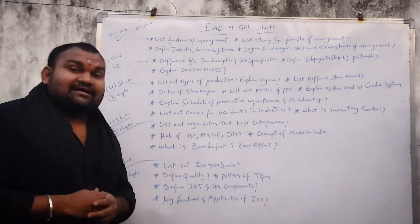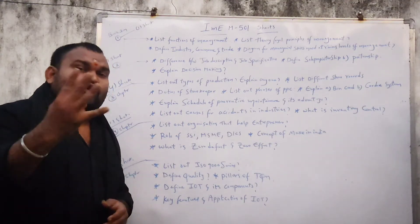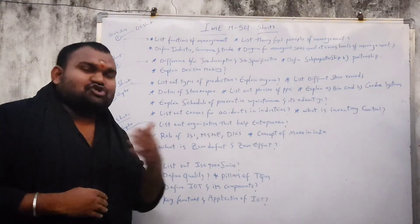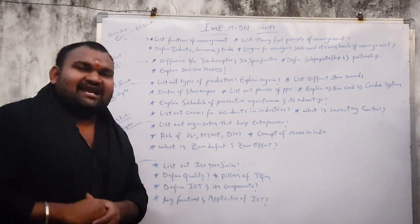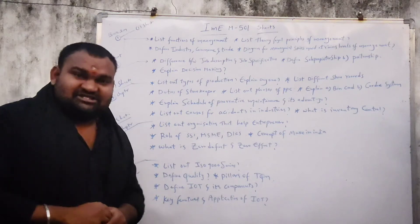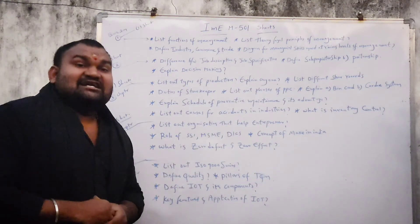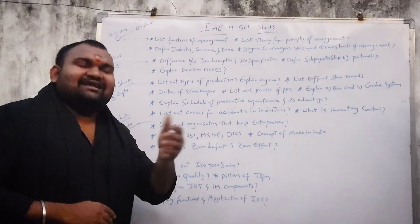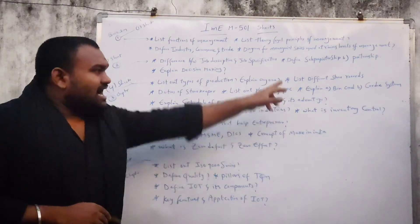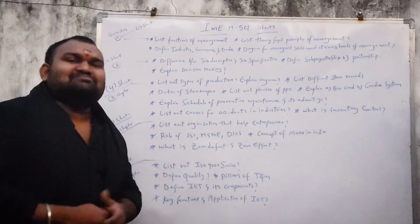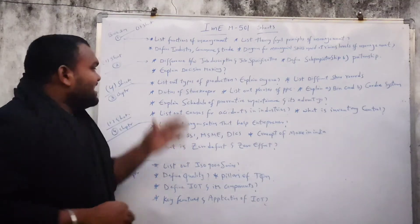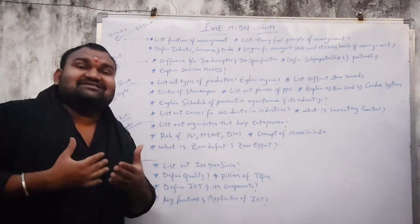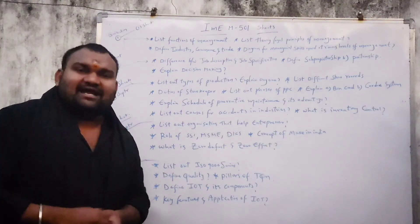Coming to the 3rd chapter: first of all, list out the types of production — any types — explain any one of them and the locating. Next, list different store records — the types of store records, list their names. Next, duties of storekeeper — list 3 points for 3 marks.